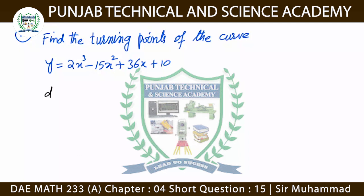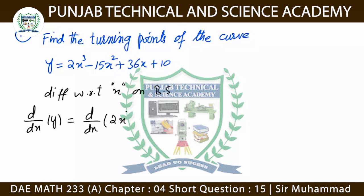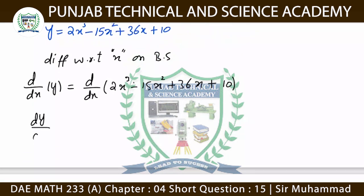First we take the derivative. We differentiate with respect to the independent variable x. So d/dx of y equals d/dx of the right side. Applying this: d/dx of 2x³, minus d/dx of 15x², plus d/dx of 36x, plus d/dx of 10.